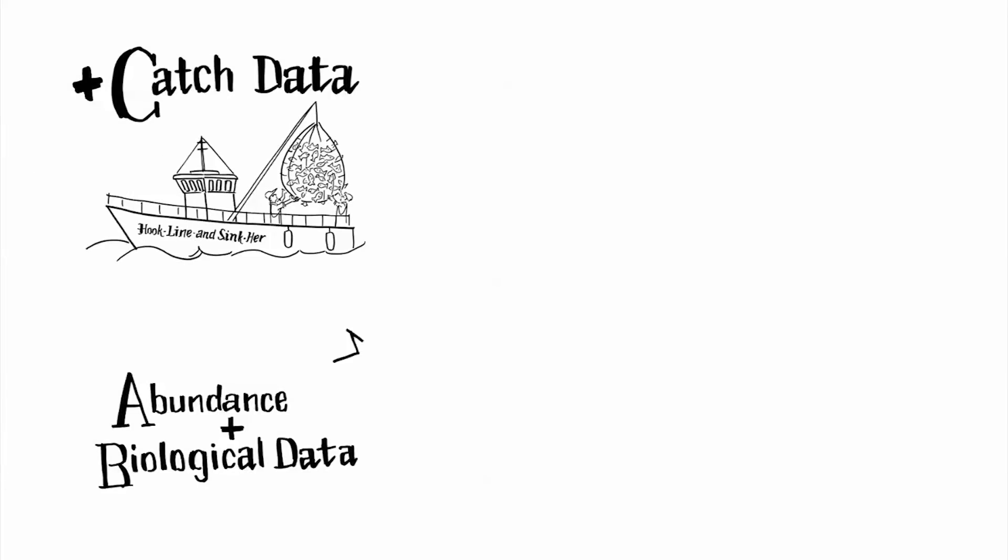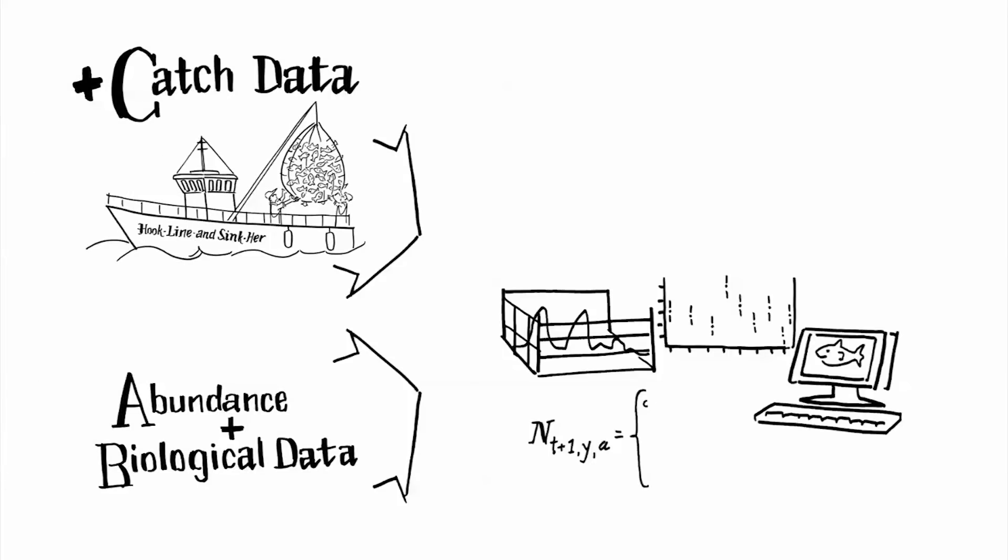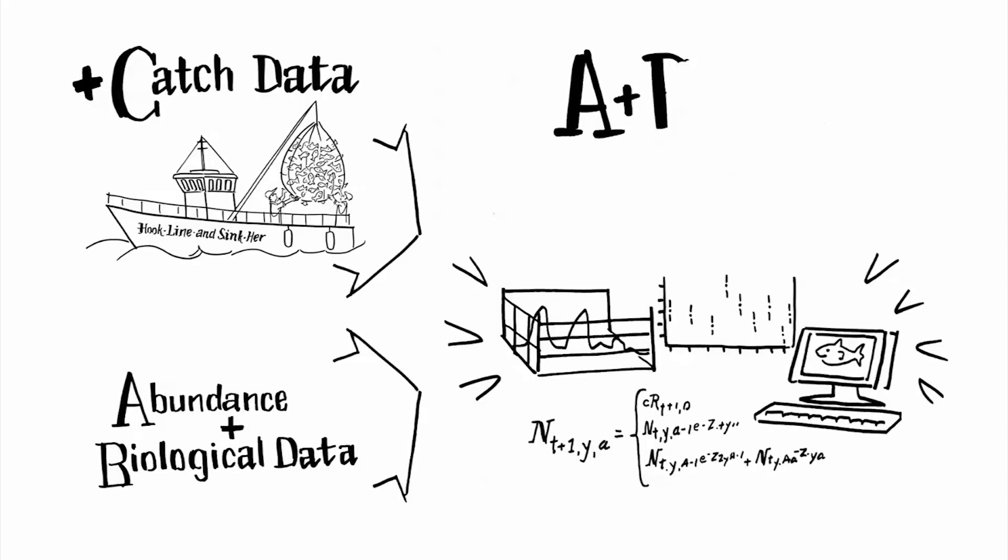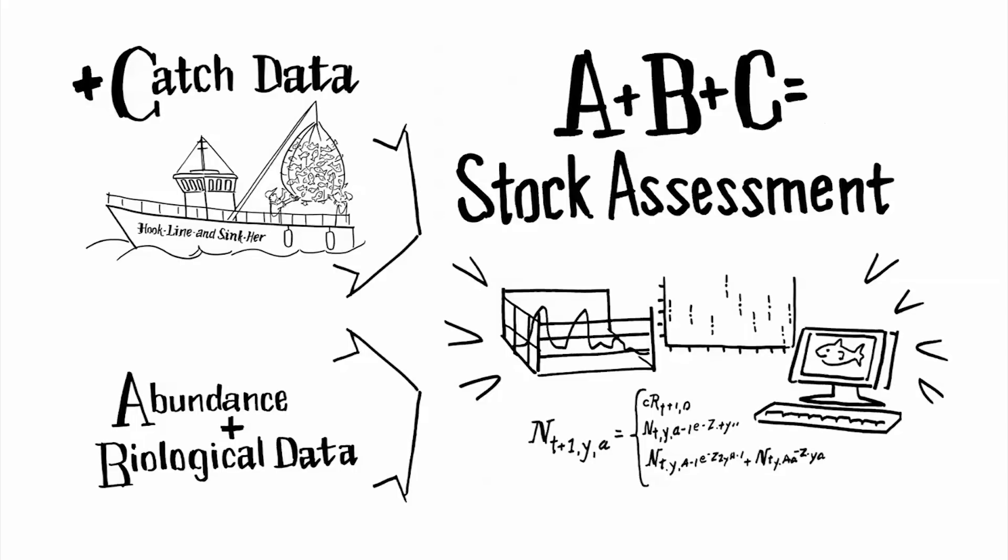All that data is then fed into statistical models that range from simple to complex, based on the available data for a given stock. The model results in a stock assessment that we can use to determine a sustainable level of fishing.